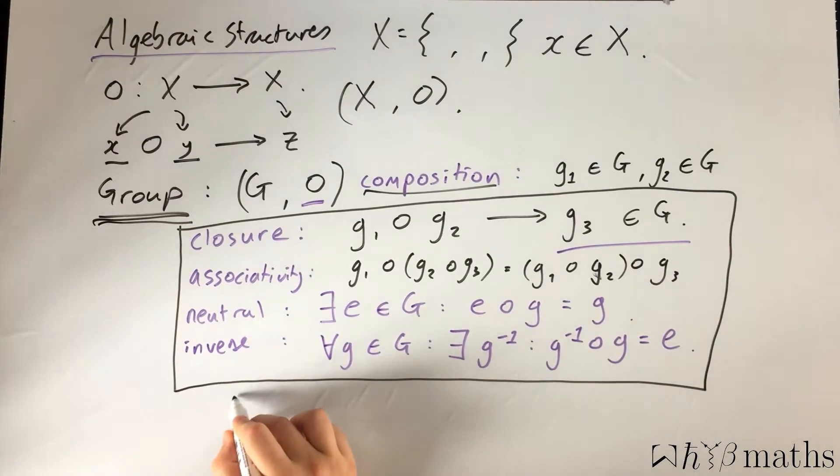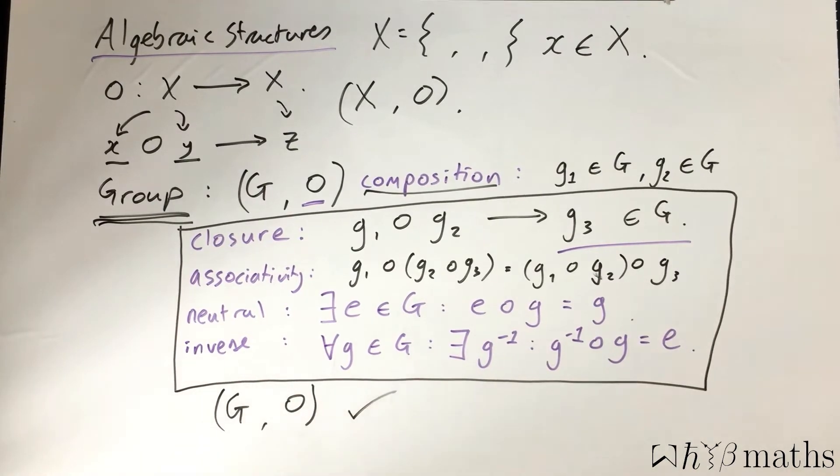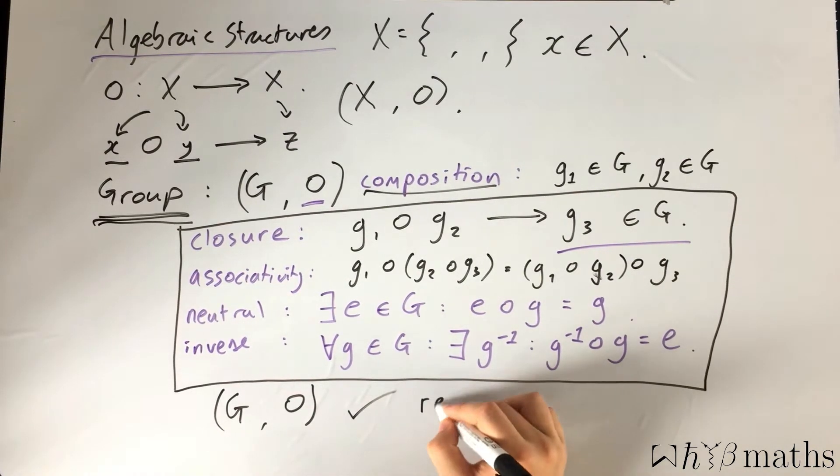So if you successfully find a set G that you can prove satisfies this set of rules under some composition operation, then voila, you have found yourself a group. Or, as we say, a representation of a group.